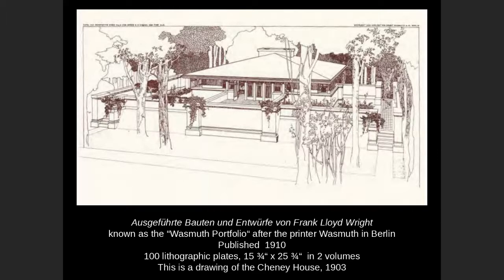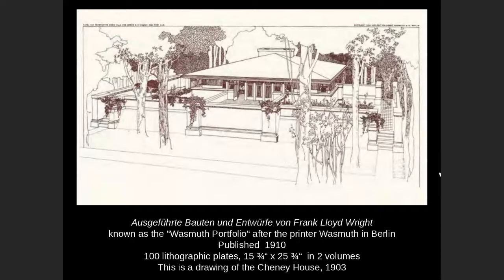He ran off with Mrs. Cheney — shown here is the Cheney House in Oak Park. During the design and construction of her house from 1903, he and Mrs. Cheney became quite close, and they ran off to Europe together. This pretty much destroyed his practice and more or less ended his Prairie Style era. But what it did was: he got an offer from a gentleman named Wasmuth in Berlin to publish a portfolio of his works, published in 1910.